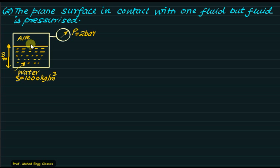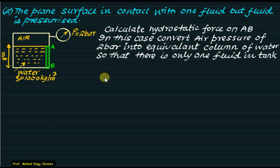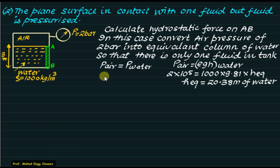To solve this type of problem, we first convert the external air pressure into an equivalent water column. Converting 2 bar of air pressure: pressure due to air equals pressure due to water, so 2 × 10⁵ Pa = 1000 × 9.81 × H_equivalent, giving H_equivalent = 20.38 meters of water. Replacing the air column with 20.38 meters of imaginary water makes the tank effectively open, giving a total water height of 3 + 20.38 = 23.38 meters.